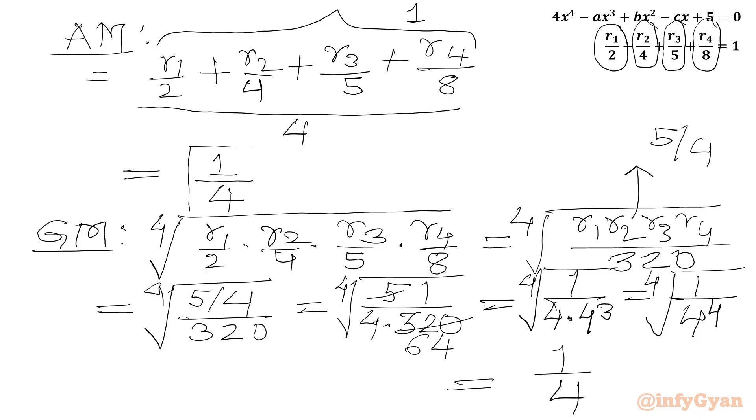Now AM equal to 1 over 4, GM equal to 1 over 4. Equality holds true and this is only possible when each of the number must be equal to each other. So I will write here AM equal to GM.